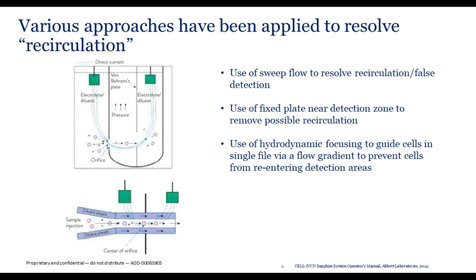Various approaches have been applied to resolve the recirculation artifact. Some manufacturers use lateral flow of reagents to sweep already-counted cells away from the detection zone. Others use a plate close to the orifice — called the von Behrens plate — to remove recirculating cells from the detection zone. Another alternative uses hydrodynamic focusing: a sheath of fast-moving fluid guides and confines the cell suspension through the orifice of the aperture, continuously propelling cells forward and away from the impedance detection zone, while also focusing cells on the very center of the orifice.